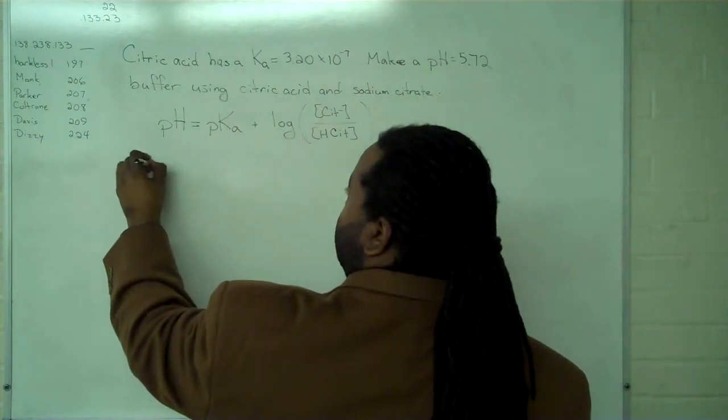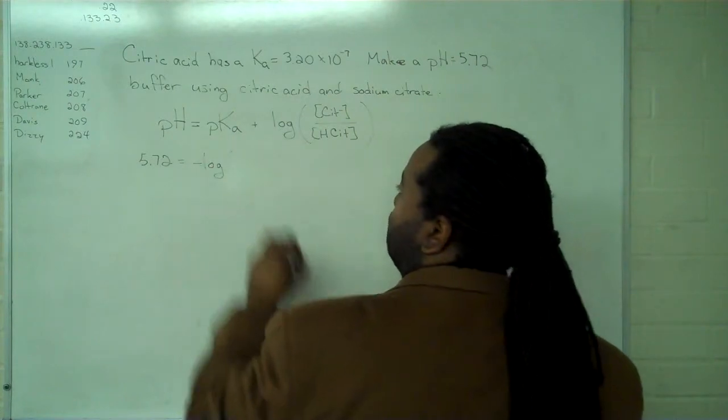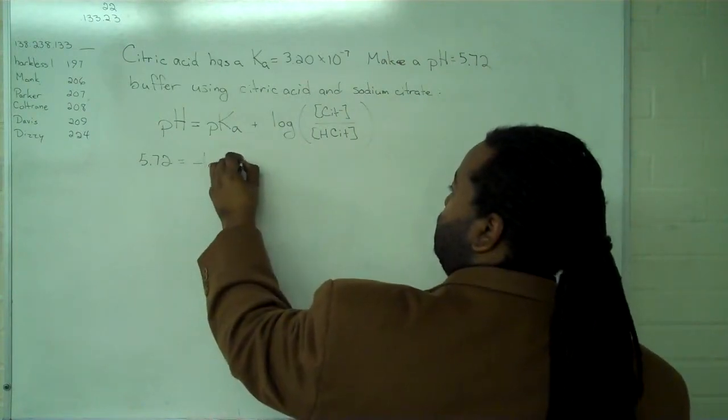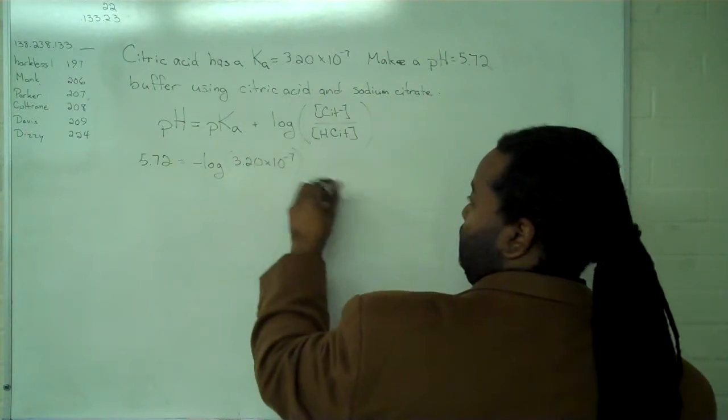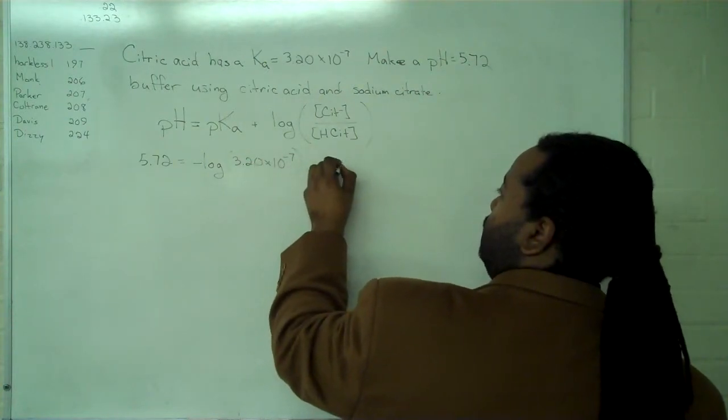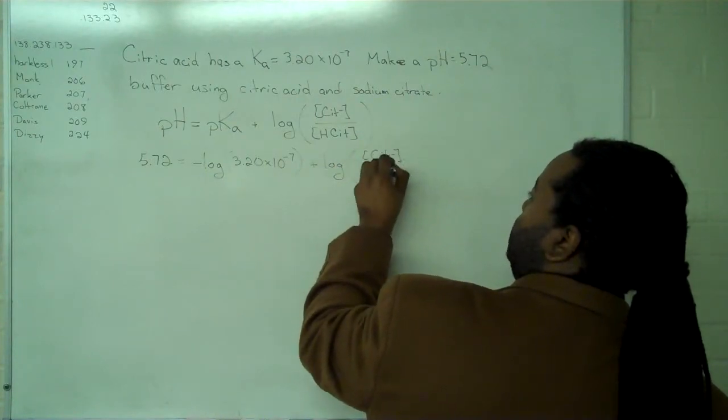So we have 5.72 for the pH, and we're going to take minus log of the pKa, which is 3.20 times 10 to the minus 7. So we continue to write out the logarithm of our ratio here.